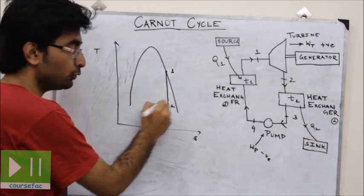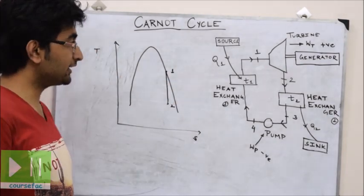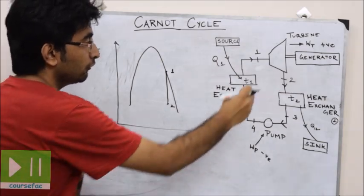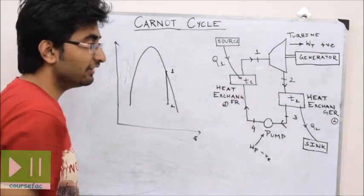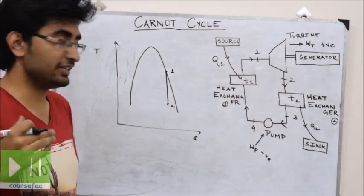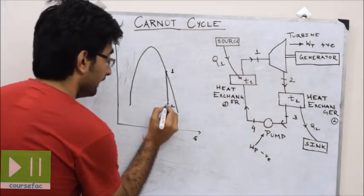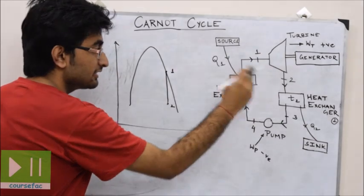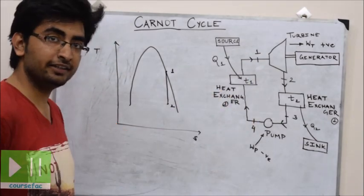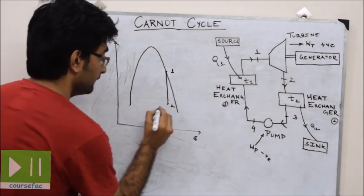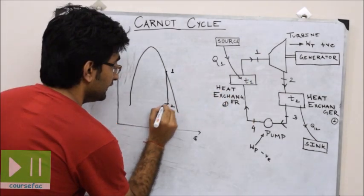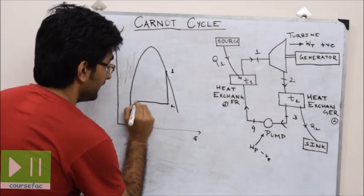1 to 2 is isentropic expansion. From 2 to 3, we have isothermal heat rejection. That is, steam gets converted into water at constant temperature and constant pressure.